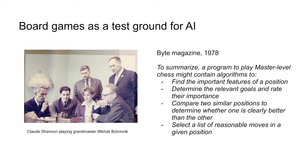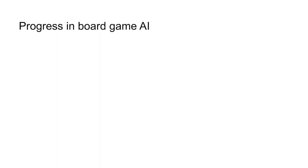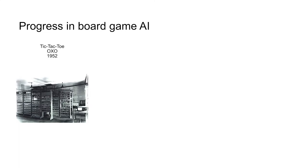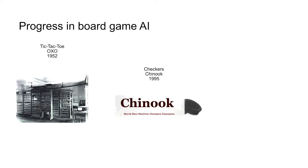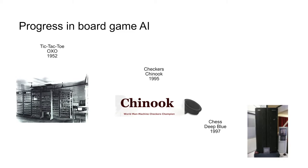Computer scientists have been building machines to play board games for a long time. Back in 1952, the machine OXO managed to play a perfect game of tic-tac-toe. Flashing forward to 1995, the computer Chinook became the world champion in checkers — technically, because humans are mortal. The best human checkers player, Marion Tinsley, actually passed away in the middle of their match, and Marion Tinsley was so much better than every other player that Chinook became world champion, though we'll never know if Chinook was truly better. And then in 1997, many of you may have heard, Deep Blue beat Garry Kasparov, who was the world chess champion at the time.